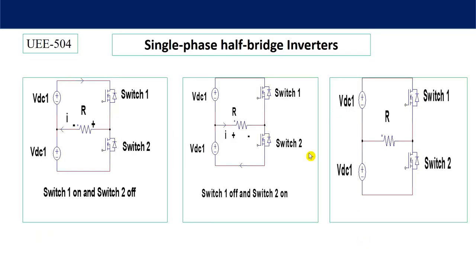In the last class I explained that when switch one is on, current flows in this direction and output voltage will be VDC1. When switch two is on and switch one is off, current flows in the opposite direction and the voltage is minus VDC1. So as the current is opposite, the output voltage will be opposite to the previous one, giving both positive and negative half cycle output voltage. Now let's see what is the voltage across the switch when it is off.